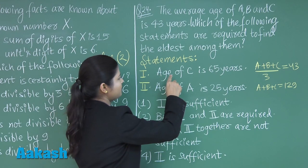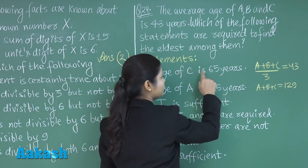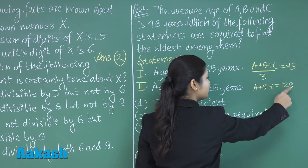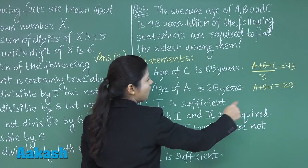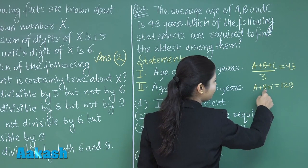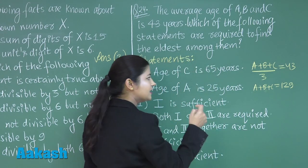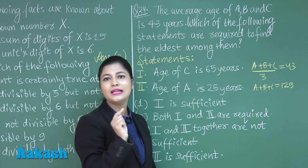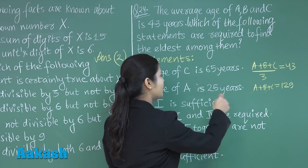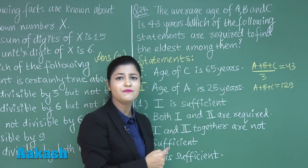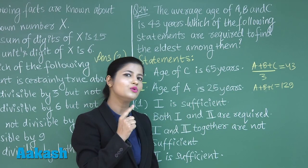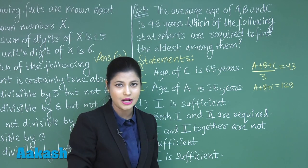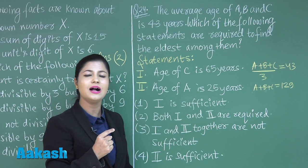Let us check statement 1: the age of C is 65 years. If C is 65, then transposing to the other side, A plus B equals 129 minus 65, which is 64 years. So the sum of A and B together is 64 years, while C alone is 65 years. Since A and B together only sum to 64, both A and B individually must be less than 65. Therefore, C is clearly the eldest of the three.